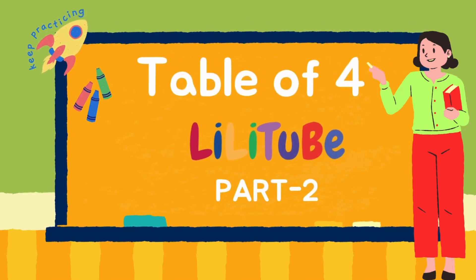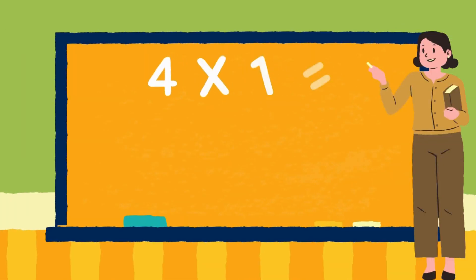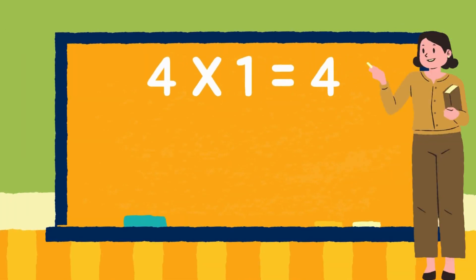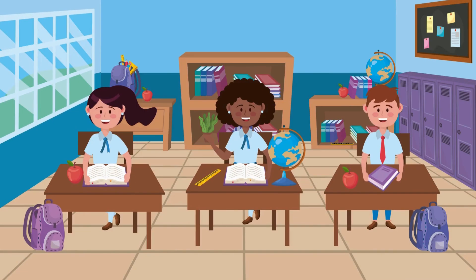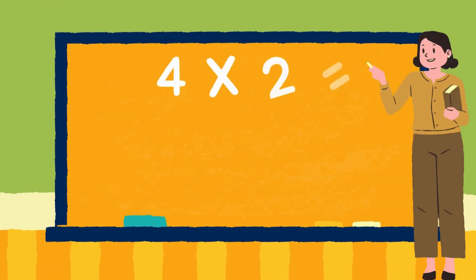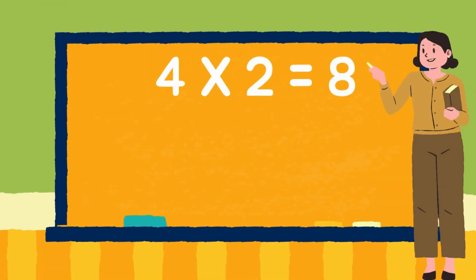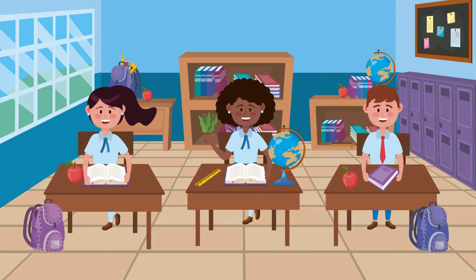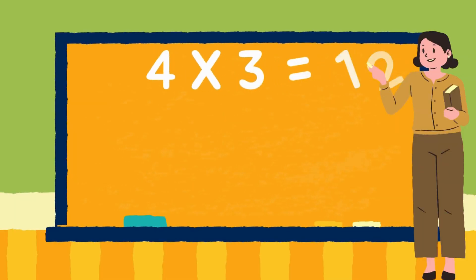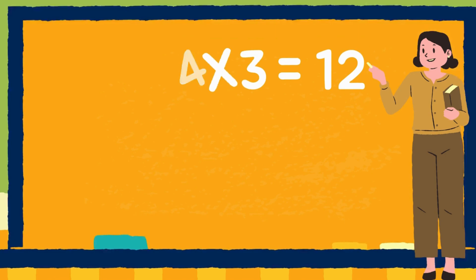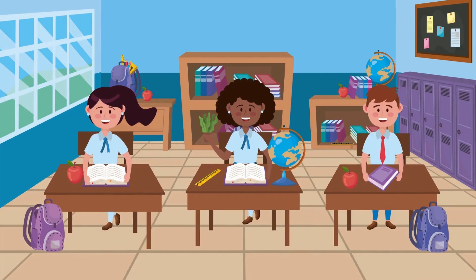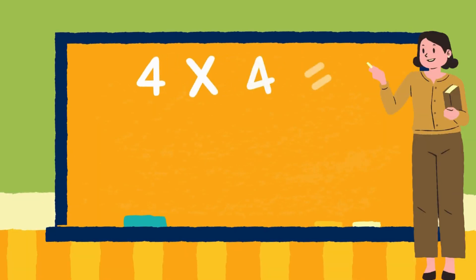Let's learn table of 4. 4 ones are 4. 4 twos are 8. 4 threes are 12. 4 fours are 16.